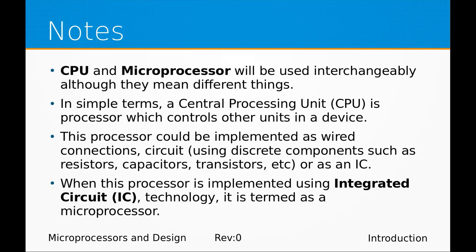A CPU is a central processing unit. A processor is some device or group of devices which has to manipulate certain given data. For instance, in a sound system, a processor could be an amplifier which multiplies an input signal by a certain gain. The central processing unit is a group of devices or subsystems which acts to manipulate data, control other systems, or coordinate activities of the device. A CPU could be implemented using wire connections or discrete components such as resistors and transistors.